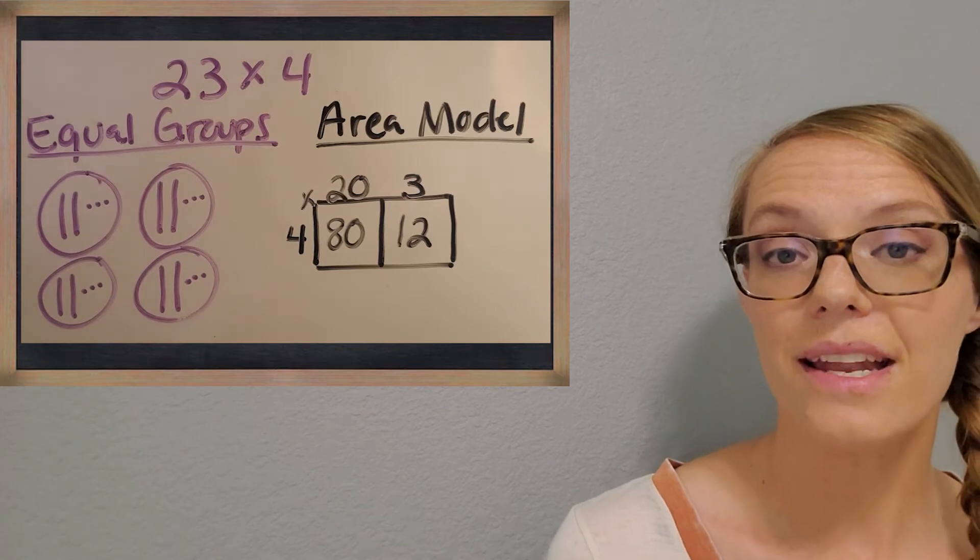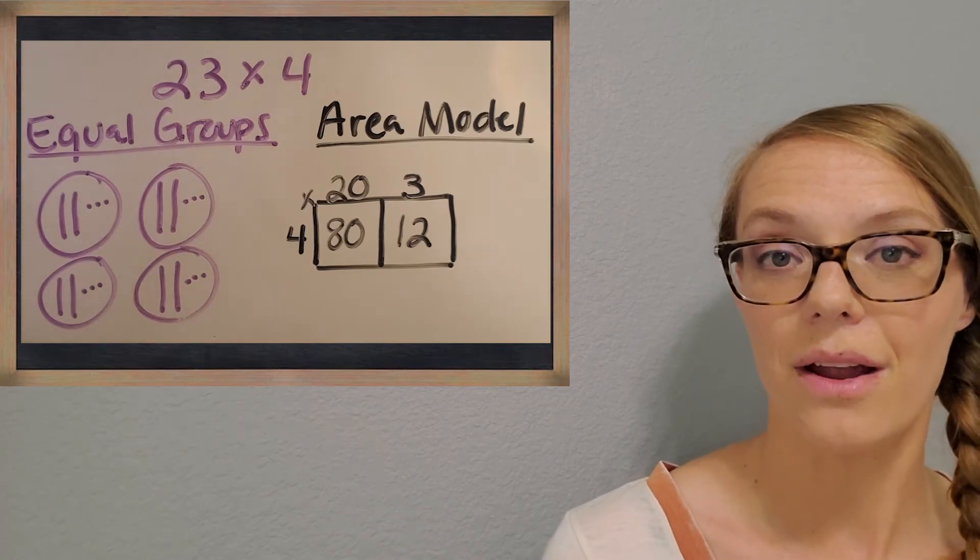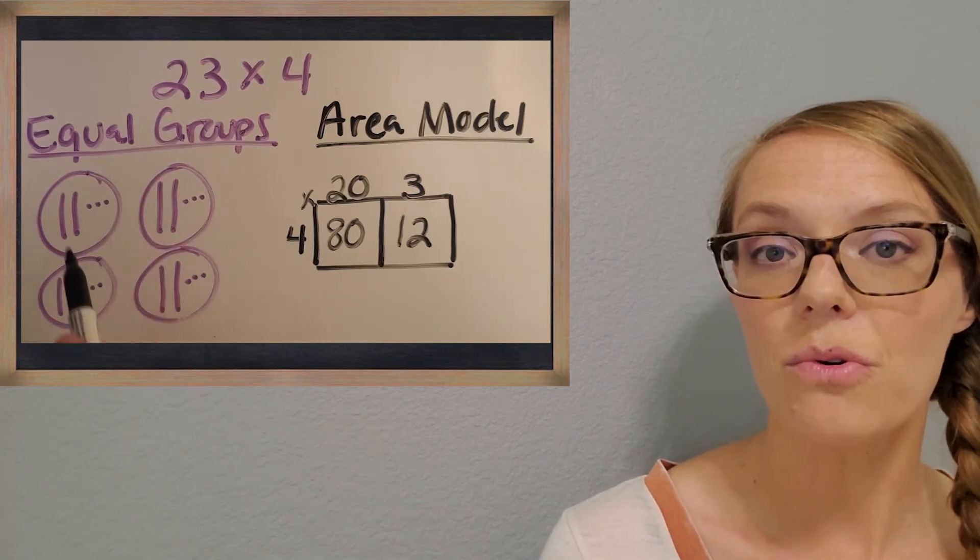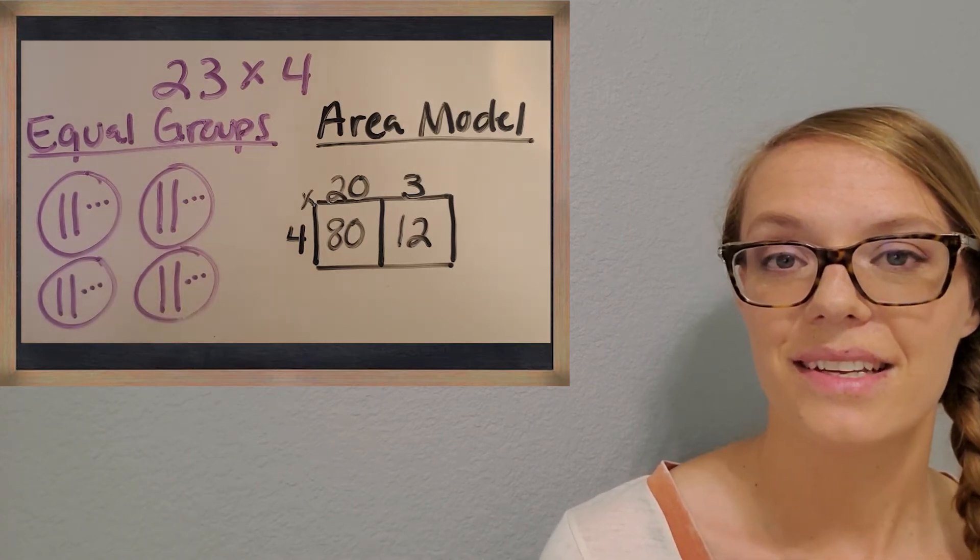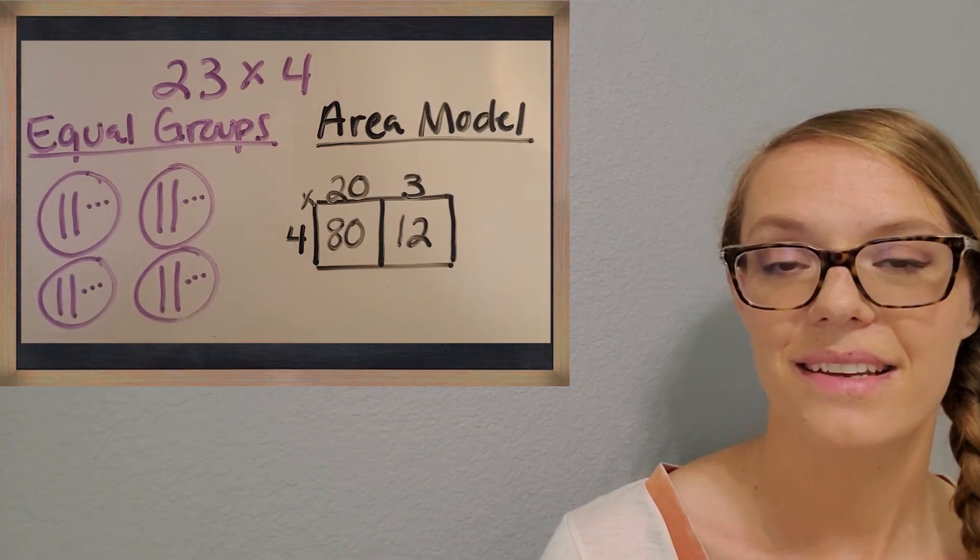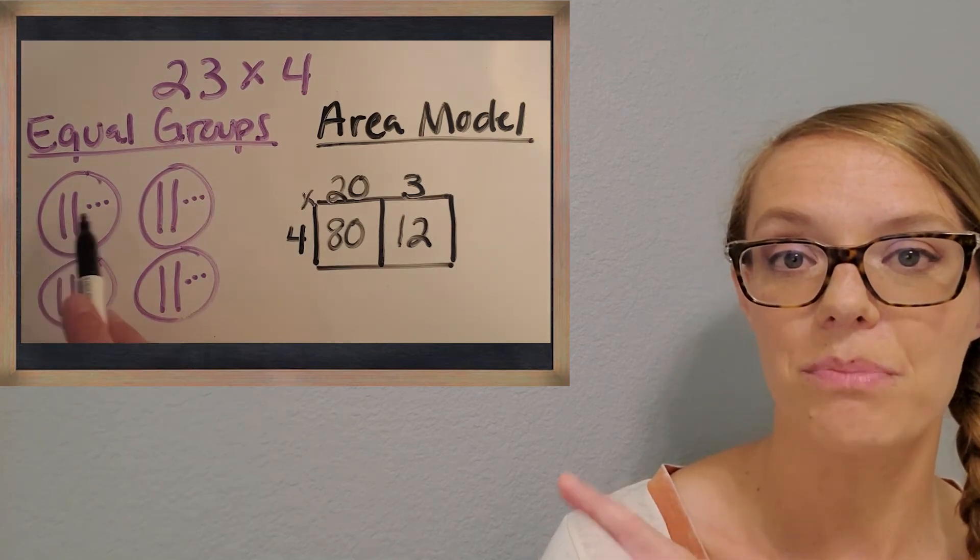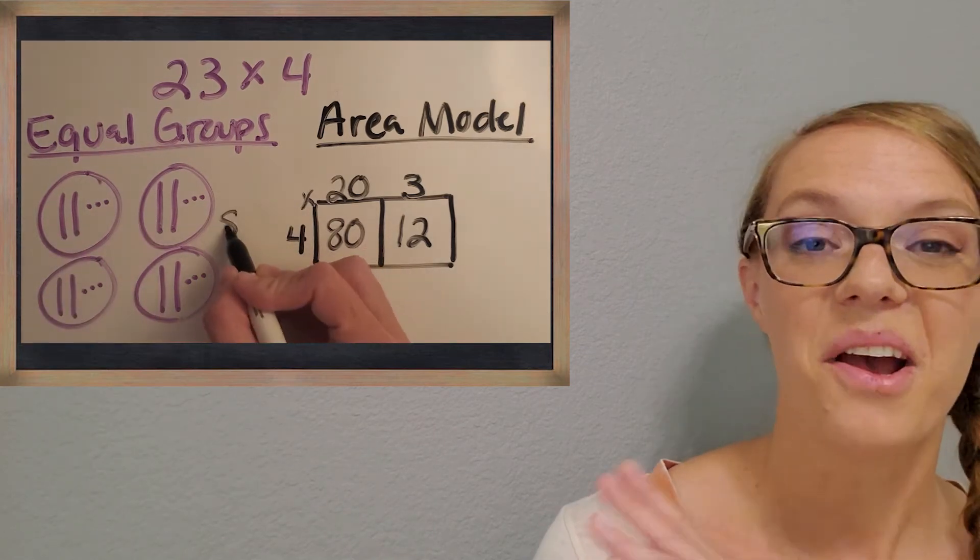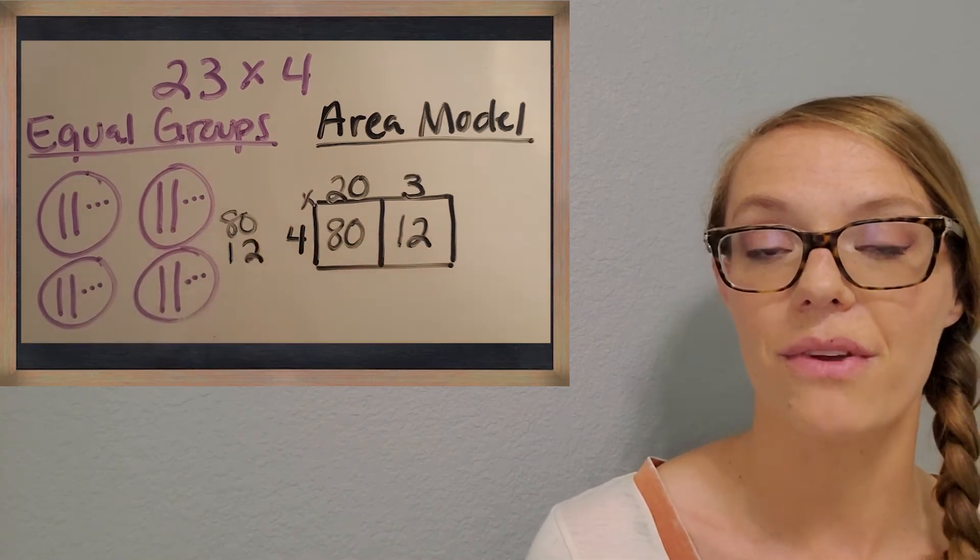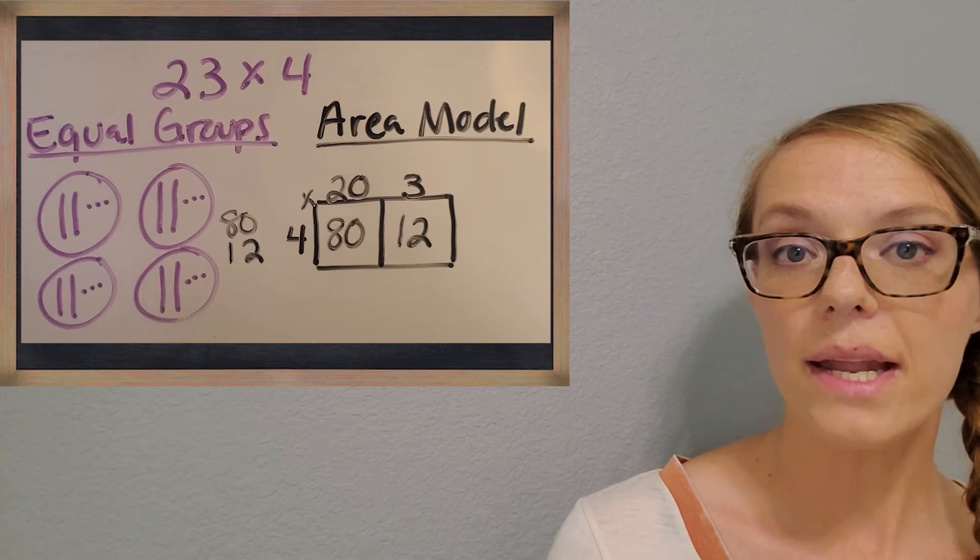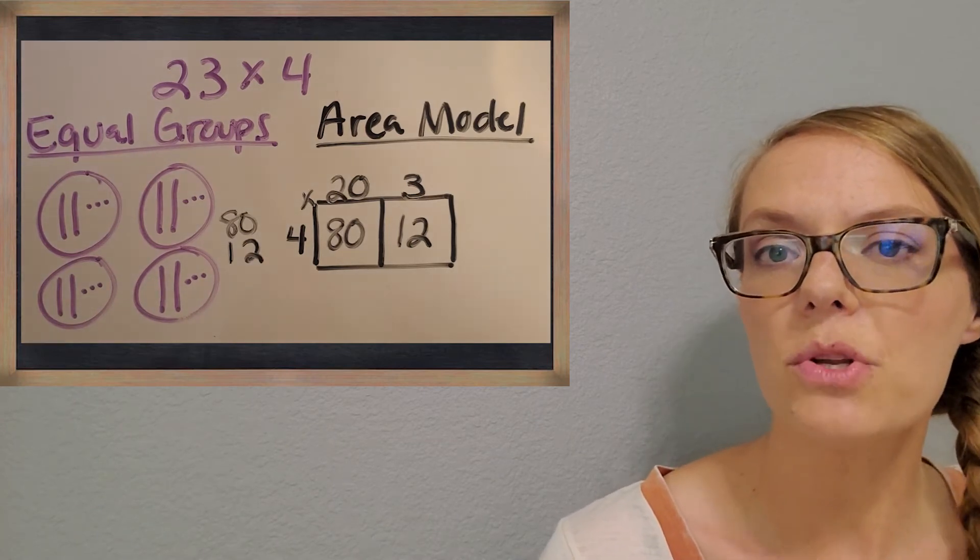I already see a connection that we can make between the area model and the equal groups drawing. Does anyone see that? Awesome. When we counted up the longs, we got 80. When we counted up the ones, we got 12. So it already looks very similar. Now in the area model, what do you think we would do next? We've got both parts of our area model filled in. What do you think we would do to find the total answer?